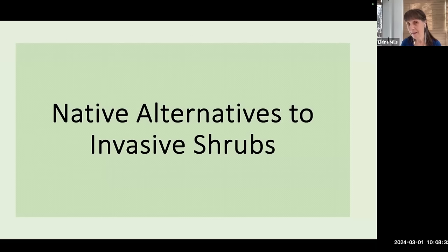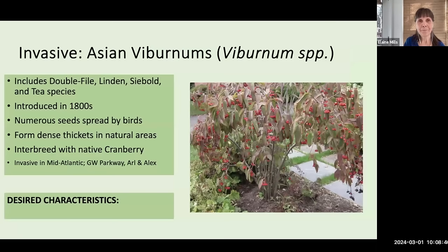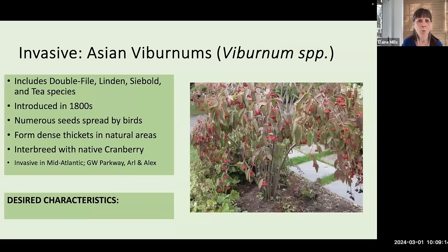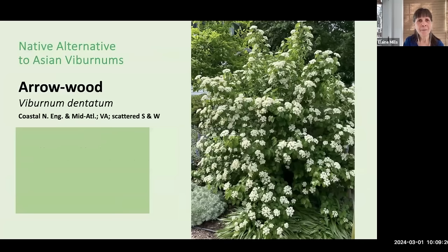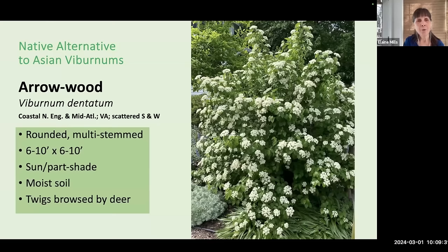A link has been sent for those attending now, and this resource will also be available on our website. Our first invasive shrub is the Asian viburnums — there are a number of species. Introduced in the 1800s, they spread easily by birds carrying seed and form dense thickets in natural areas. They're invasive throughout the mid-Atlantic, and can interbreed with our native cranberry. If you're looking for a shrub with fruit and fall color, I suggest Arrowwood, Viburnum dentatum, as an alternative.